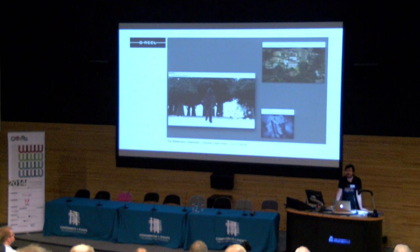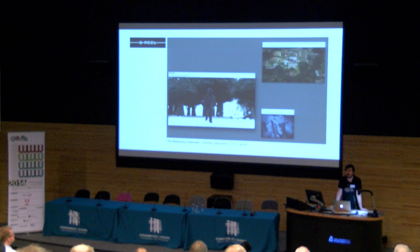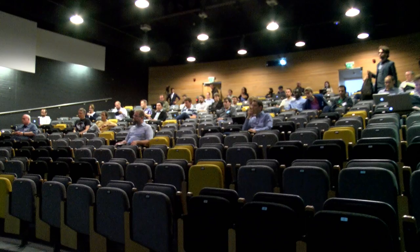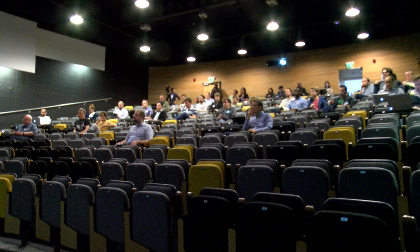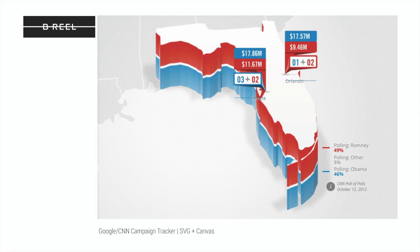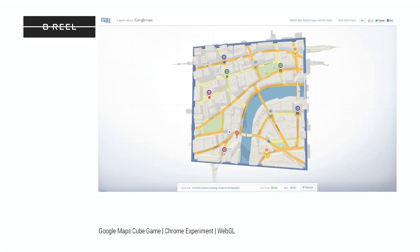I work on projects like, if you remember the Wilderness Downtown, one of the first 'find your home in Google Maps' experiences — a few years back, using CSS and Canvas, there was no 3D acceleration in the browser yet. Then the CNN campaign tracker for the presidential election in the United States in 2012, using SVG and Canvas rendering. And the Google Maps cube game — one of the first games in browser to use WebGL, the first release of WebGL, three years back.